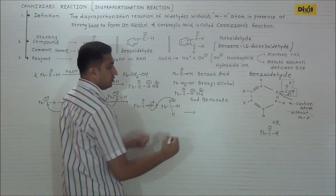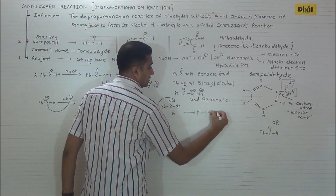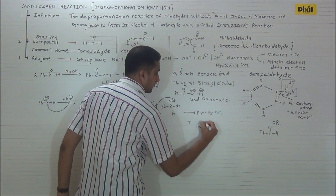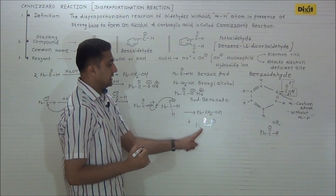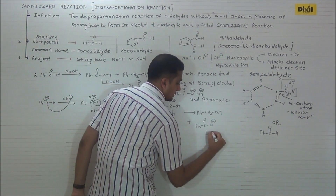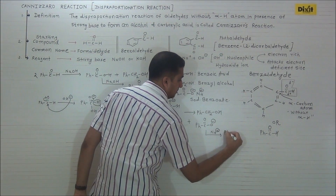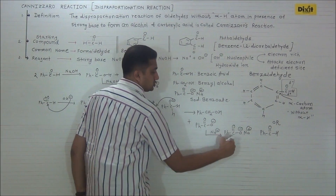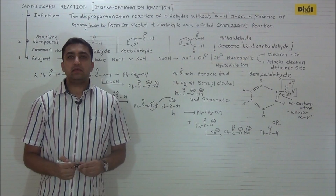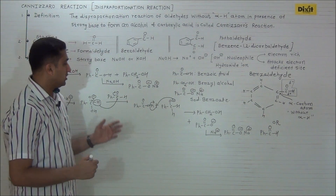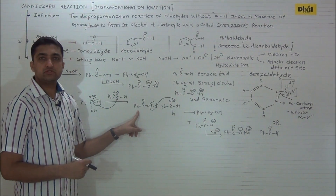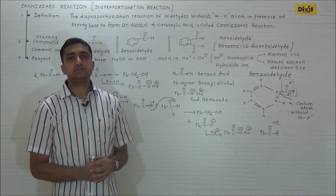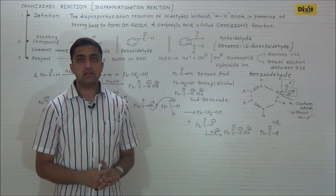As this alkoxide is a strong base, it immediately abstracts hydrogen from benzoic acid, forming Ph-CH₂OH (benzyl alcohol) and Ph-COO⁻ (benzoate ion). The benzoate ion in presence of Na⁺ gives sodium benzoate. One molecule has undergone oxidation to form benzoic acid and one molecule has undergone reduction to form benzyl alcohol. As both molecules involved are identical, this is an example of a simple Cannizzaro or disproportionation reaction.